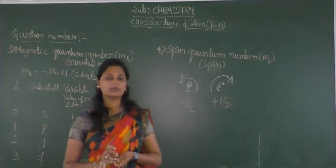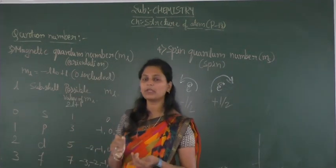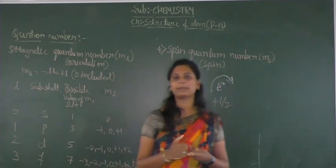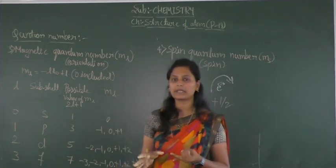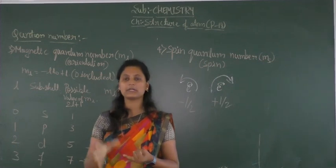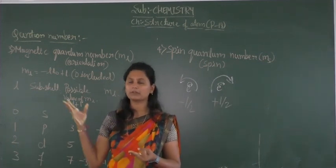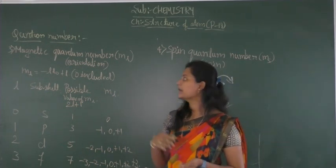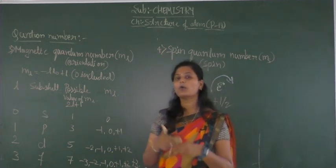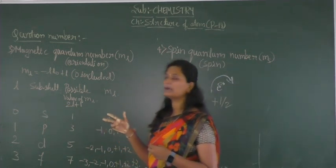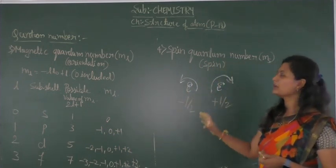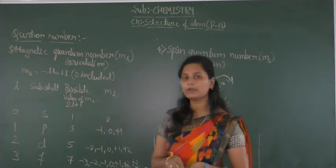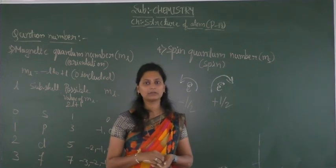This is about today's session. We discussed about the principal quantum number, azimuthal quantum number, magnetic quantum number, and spin quantum number. The principal quantum number explains the size of orbitals, the azimuthal quantum number explains the shape, the magnetic quantum number explains the orientation, and the spin quantum number explains the spin of an electron. I hope you understood about today's session. We will meet in our next session. Thank you.